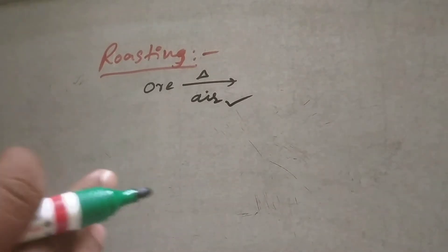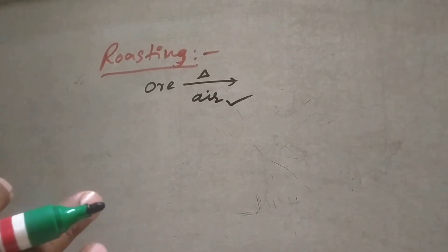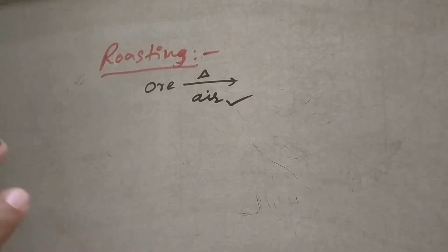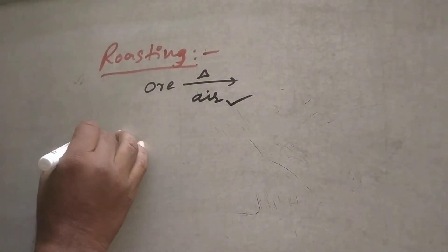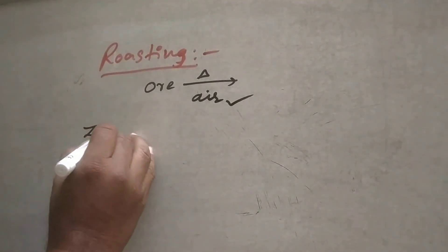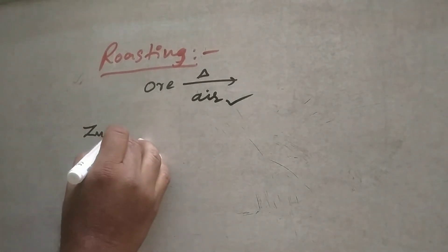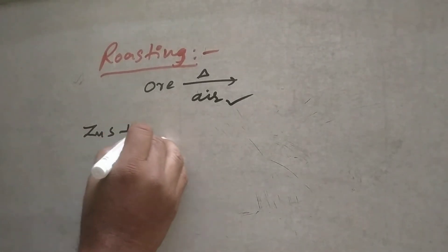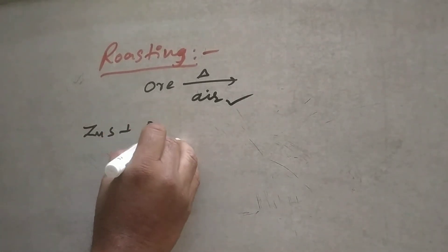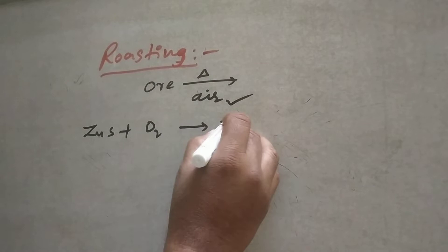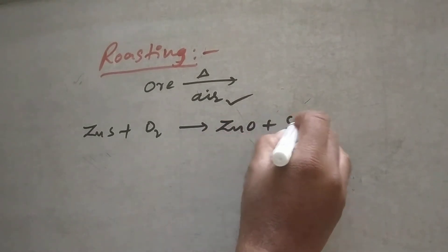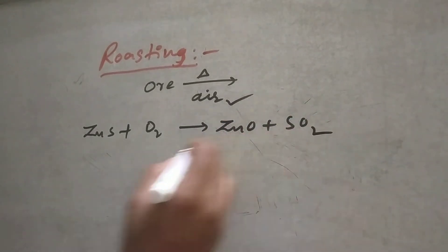Roasting means the ore is subjected to heating in the presence of air. For example, take zinc sulfide (ZnS) plus oxygen — on heating it gives ZnO plus sulfur dioxide (SO2).